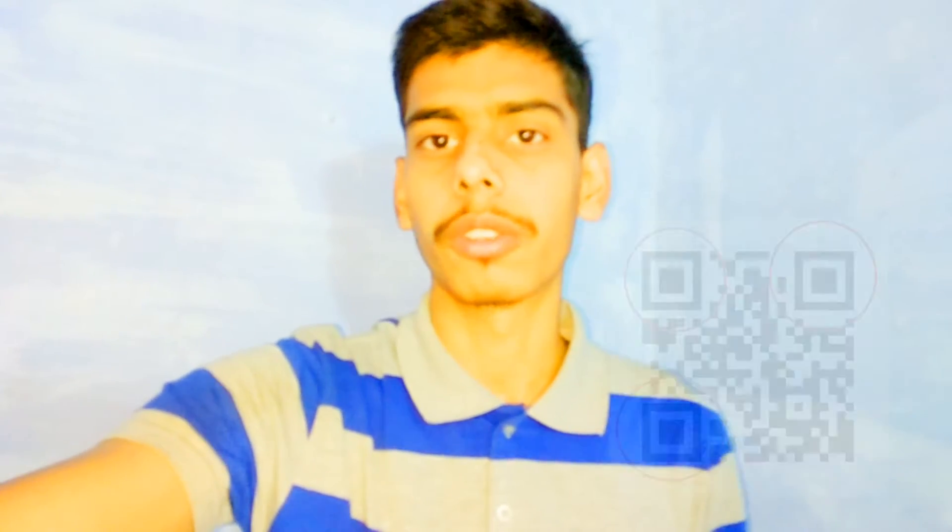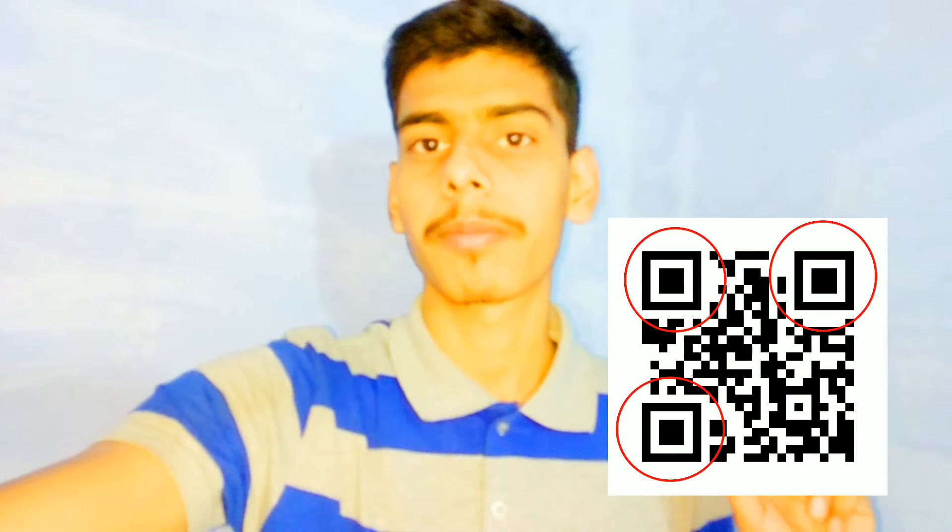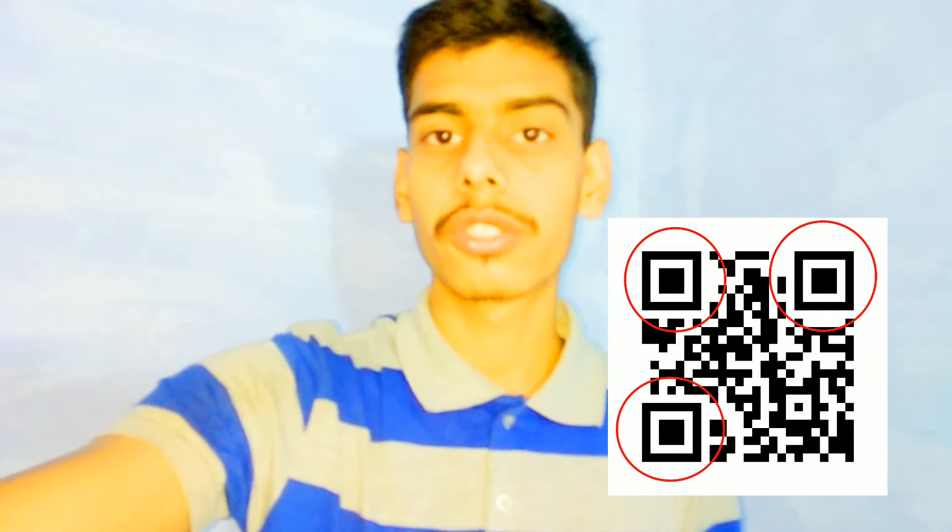QR code is a derived version of a barcode. In barcode there are a number of lines, and similarly QR code is a collection of a matrix. When light falls on a QR code, the white region reflects the light and a computer, mobile device, or any electronic device can determine what data is stored in it. In QR code you can see three squares at the corners — these three squares store data about what type of formatted data it contains — and the other squares contain the actual data.